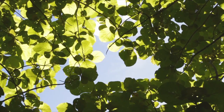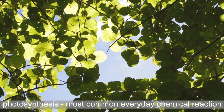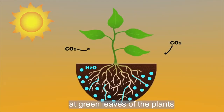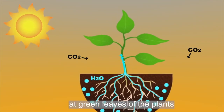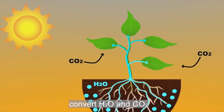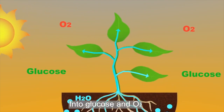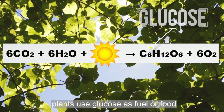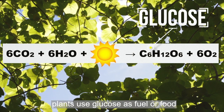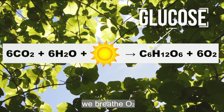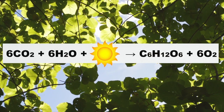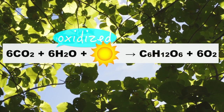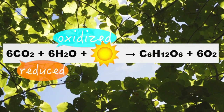Number three: photosynthesis. Photosynthesis is the most common everyday chemical reaction. It takes place in the green leaves of plants to convert water and carbon dioxide into glucose and oxygen. The plants use glucose as fuel or food. We breathe the oxygen that plants release into the air. In this reaction, water is oxidized and carbon dioxide is reduced.